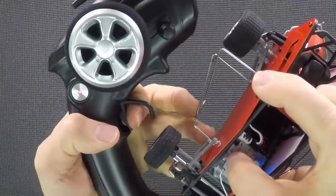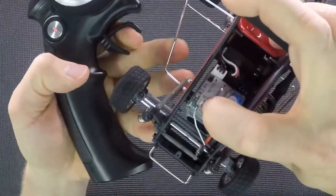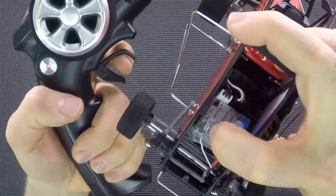Then pull the trigger to full throttle. Hit the set button again and you'll see it blink twice. That means the full throttle position is set.